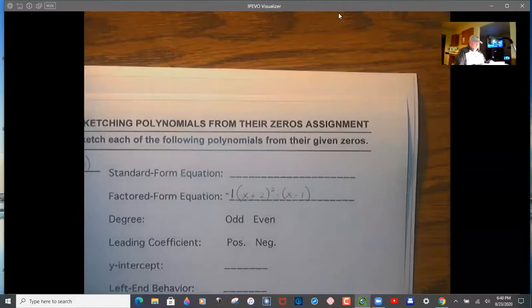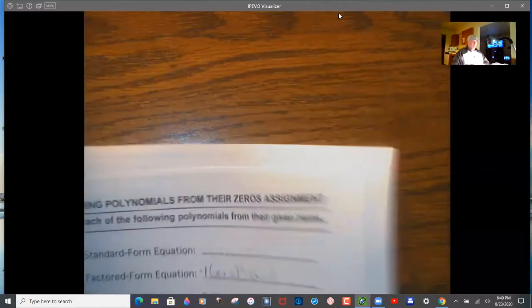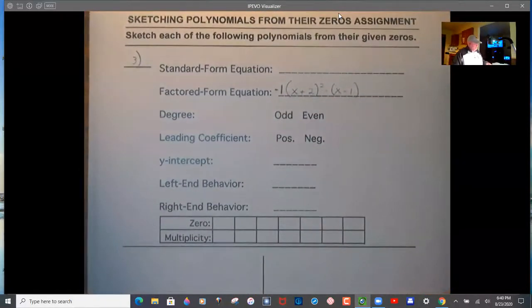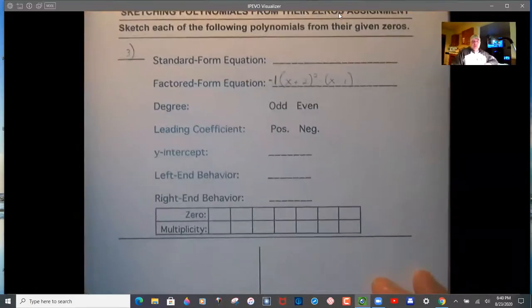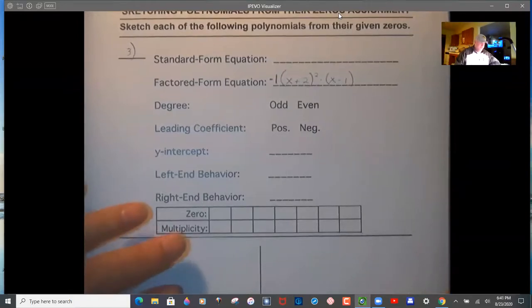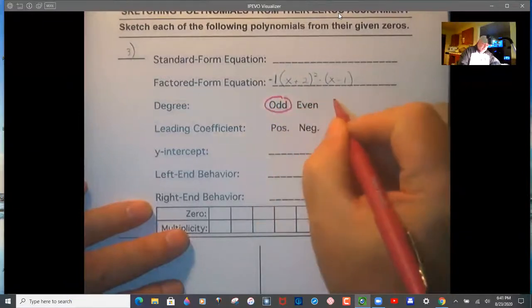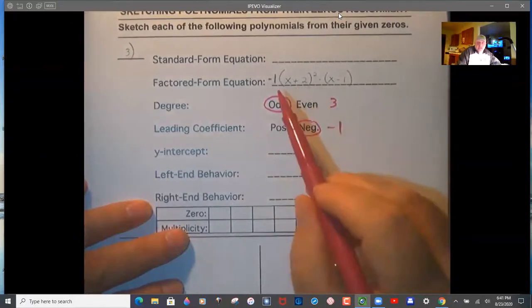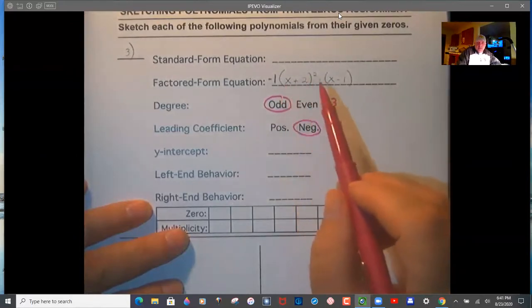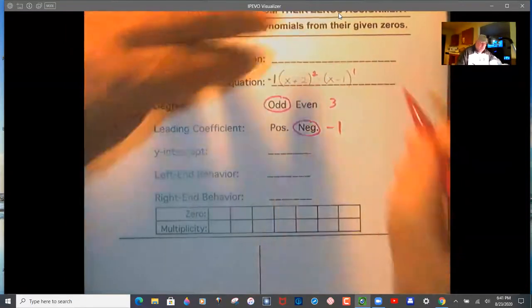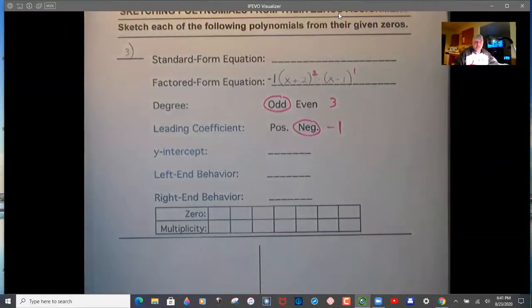Problem 3. Standard form I'm not real concerned about, I don't even give it on my answer keys. Just know how to multiply one out, you'll have a couple on the quiz. This is odd, degree 3. This is negative, it's -1. Think of -1 times 1 times 1 because this is squared times 1. The power is 3 because I've got a 2 and a 1. The degree is the sum of the exponents or multiplicities. They're all the same. The degree is the sum of the multiplicities.